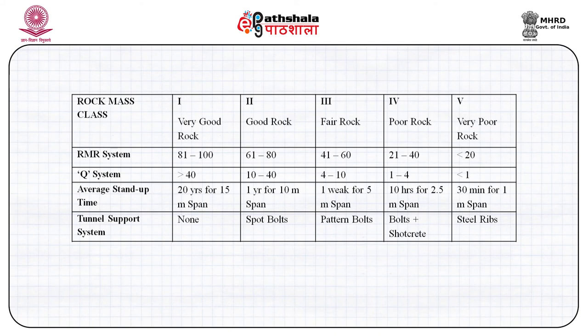Sometimes what happens is that if you are tunneling for 1 kilometer, you may come across any of these rock mass classes — very good, good, fair, poor, and very poor rock mass if you are crossing any shear zone or fault zone. Within a tunnel, we may have probability of encountering different conditions. That is why it is said that as far as tunneling operation is concerned, you have to design as you go — be ready for the worst and hope for the best.